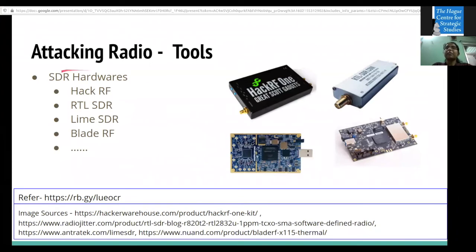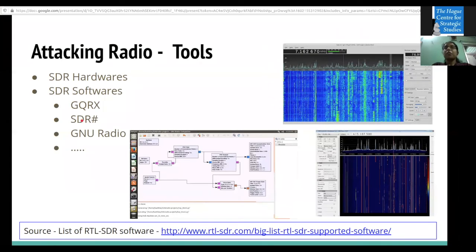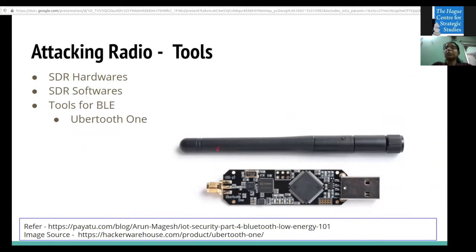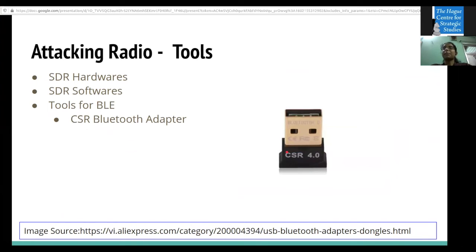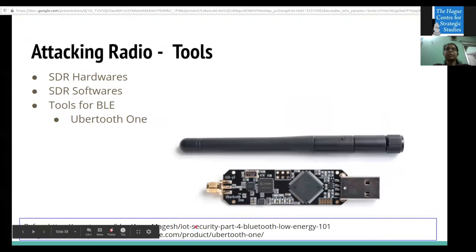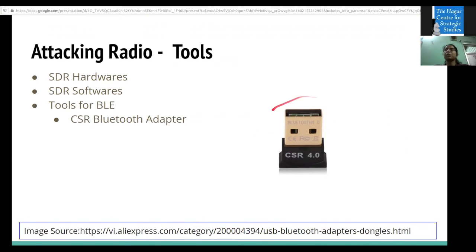Hardware tools for radio attacks include Software Defined Radio devices like HackRF and RTL-SDR, each with different supported frequencies and features. GNU Radio is the most commonly used software for radio work. For BLE sniffing, you can use UbertoothOne, which helps sniff Bluetooth Low Energy communication. CSR adapters are also used for BLE attacks. You can connect these to your host machine and perform certain attacks. For Zigbee, tools and frameworks are available for testing.